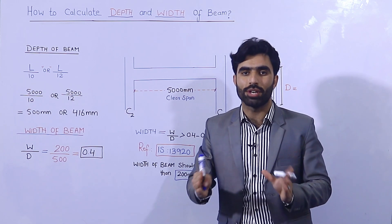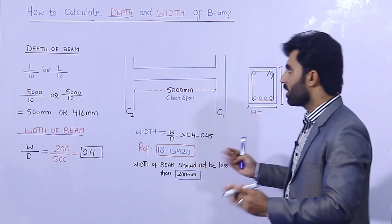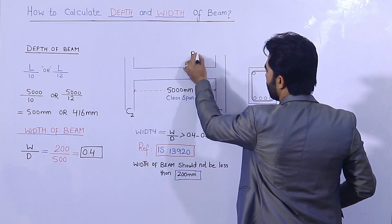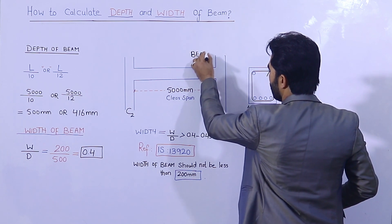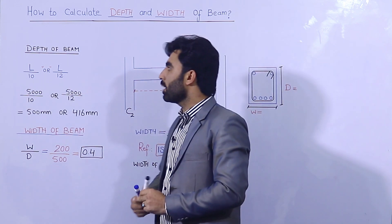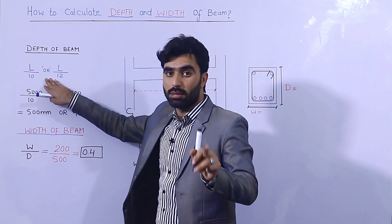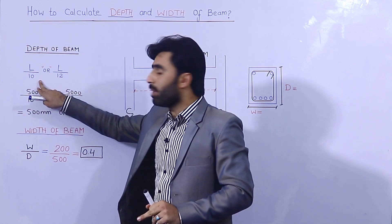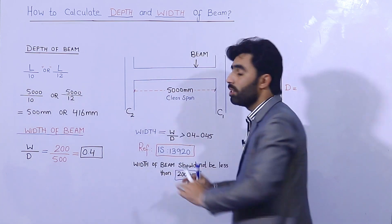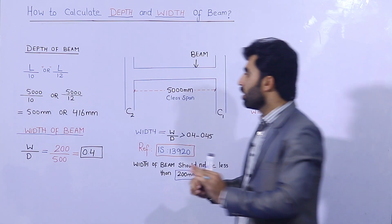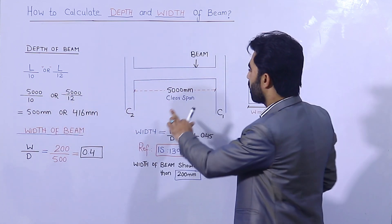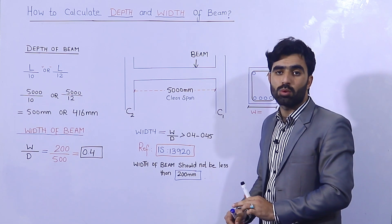This is the beam between column 1 and column 2. We have the formula: by thumb rule, depth of the beam equals L divided by 10, or L divided by 12, where L is the clear span between the two columns.